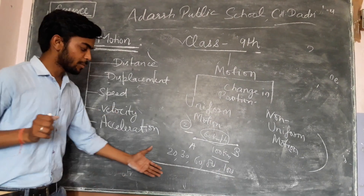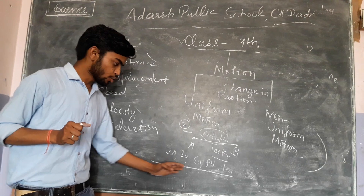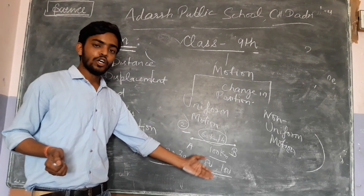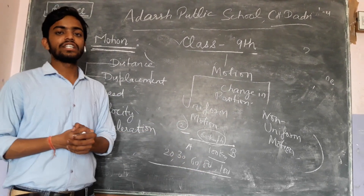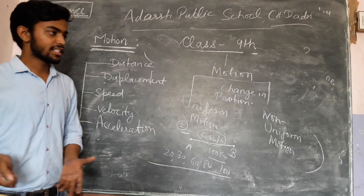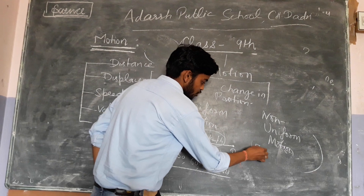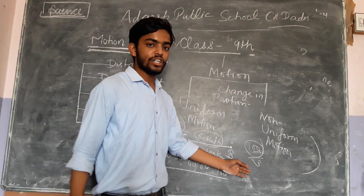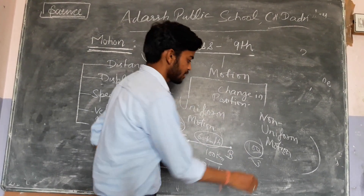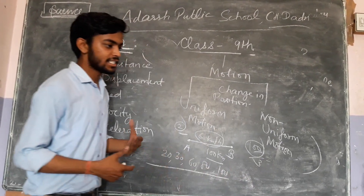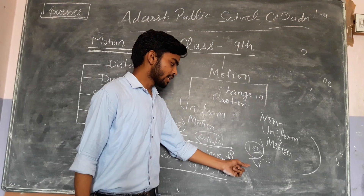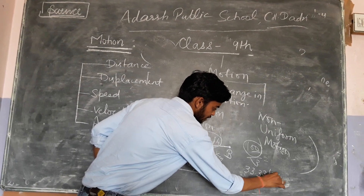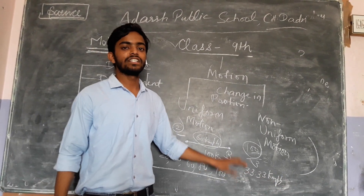Now if you know about average speed: for example, if the distance is 100 km and the time is 3 hours, we divide the distance by time to get the average speed. So the average speed is 100 divided by 3, which equals 33.3 km per hour. This is how we calculate average speed.